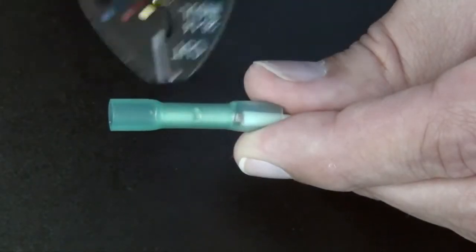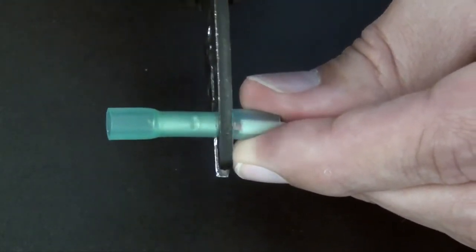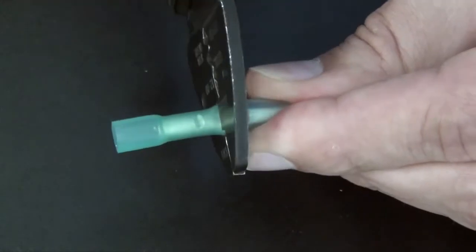Using the blue crimp nest of your crimping tool, align the tool halfway between the middle of the crimp barrel and one end of the barrel, and then crimp your first wire to the terminal.